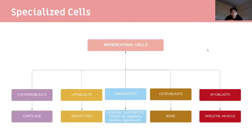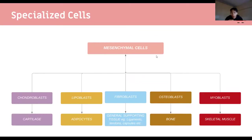Specialized cells vary by connective tissue type: chondroblasts in cartilage, lipoblasts in fatty tissue, osteoblasts in bone, fibroblasts which produce collagen and fibers in connective tissue generally, and myoblasts which lead to skeletal muscle (a different tissue type covered in the future).